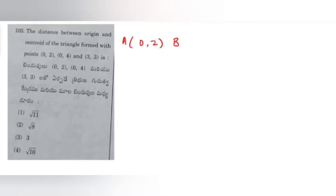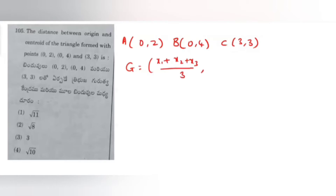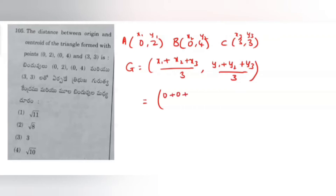Vertices: A is (0,2), B is (0,4), and C is (3,3). The centroid G is given by the formula: x1 plus x2 plus x3 by 3, and y1 plus y2 plus y3 by 3. Substituting: x-coordinate is 0 plus 0 plus 3 by 3, and y-coordinate is 2 plus 4 plus 3 by 3. That gives 3 by 3 which is 1, and 9 by 3 which is 3. So the centroid G is (1, 3).